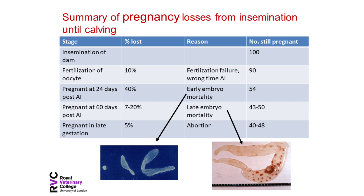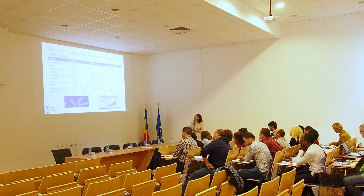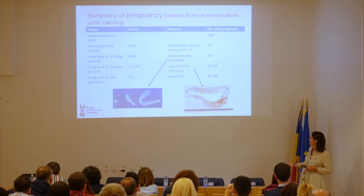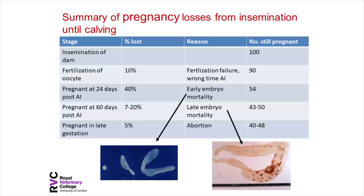Looking in more detail at when losses from insemination occur: 10% fertilisation losses are often due to timing errors or semen quality issues such as improper thawing. Then 40% early embryo losses occur as the embryo grows from a round to an elongated form before attachment. Late embryo mortality occurs around the time of attachment, and 5% abort later in pregnancy. Starting with 100 inseminations, you're doing well if 40 to 50% of those animals end up in calf and produce a live offspring.